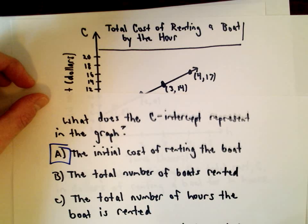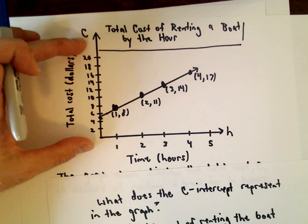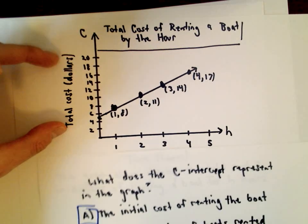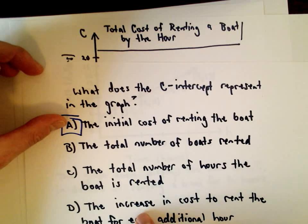The total number of hours the boat is rented - that's answer choice C. Again, the vertical axis has nothing to do with the number of hours. It has to do with the cost.